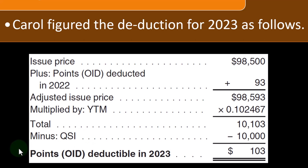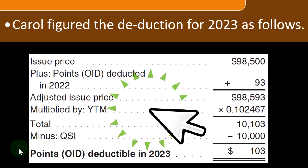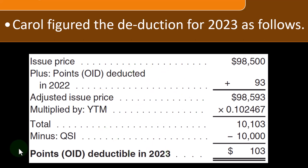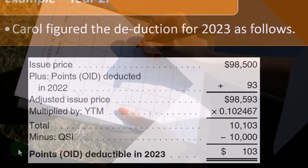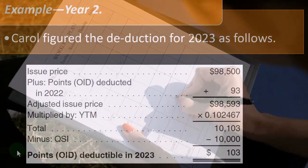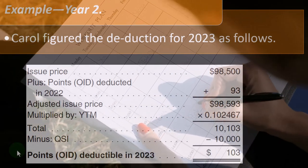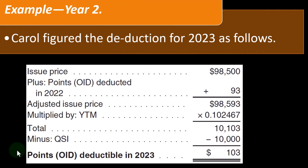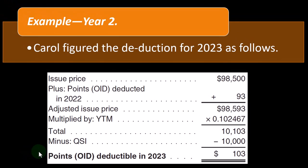To figure your deduction in subsequent years, you start with the adjusted issue price: add to the issue price from year one any OID previously deducted, then follow steps two and three. Example year two: Carol figured the deduction for 2023 as follows. Issue price $98,500 plus OID deducted of $93 = adjusted issue price of $98,593, multiplied by the YTM of 0.102467 = $10,103, minus QSI of $10,000 = $103 OID deductible in 2023. You can see the interest deducted is not the same each year—similar to a normal amortization schedule where the allocation between interest and principal changes over the life of the loan.